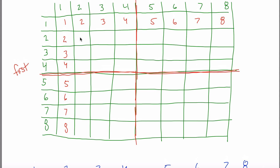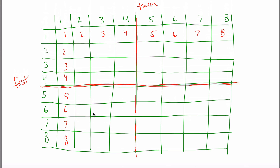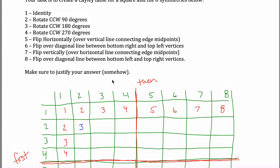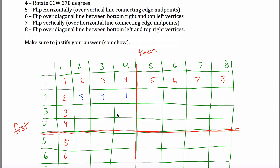Let's figure out what goes in the 2,2 box. A 2 says rotate 90 degrees counterclockwise, so it takes A down here as pictured. If I do another 2, I rotate 90 degrees counterclockwise again — that brings me to a 3. A 2 then a 2 is the same as a 3, which makes sense since 90 plus 90 is 180. A 2 then a 4 would be 90 plus 270, which is 360 degrees total — bringing everything back to the identity.